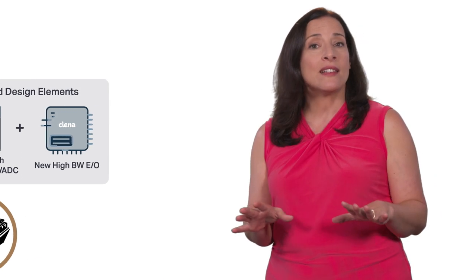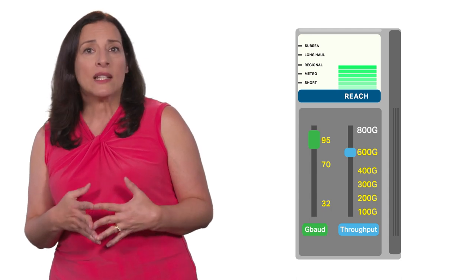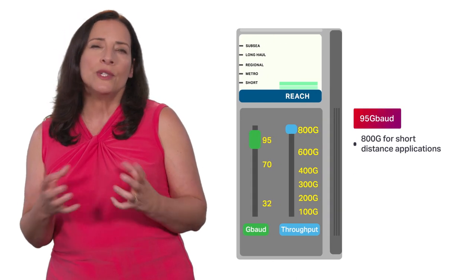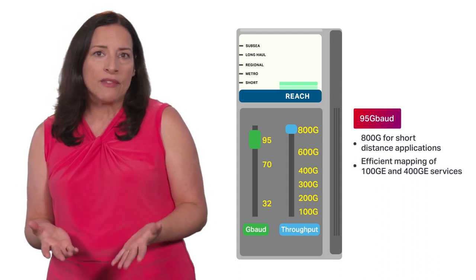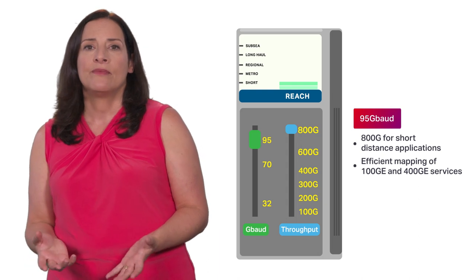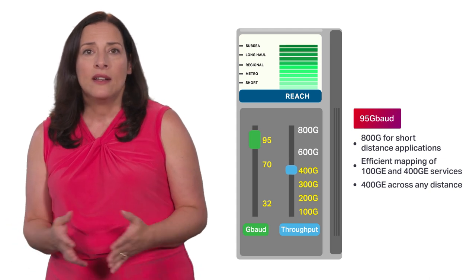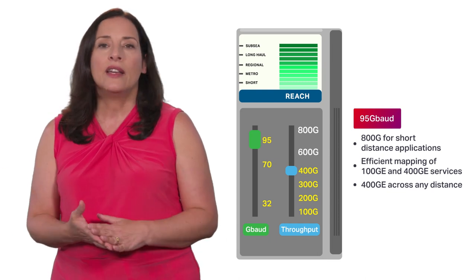So now that we've covered the context, let's see how this relates to WaveLogic 5 Extreme. Siena's WaveLogic 5 Extreme operates at 95 Gigabaud to support programmable capacity rates from 200 Gig to 800 Gig in 25 Gig increments. 95 Gigabaud was selected as a simple rate because it allows for maximum capacity of 800 Gig for practical short reach distances, like 100 to 200 kilometers, and 800 Gig can efficiently carry multiples of 100 GigE and 400 GigE services. It also allows for efficient transport of these new 400 GigE services across any distance. So 400 GigE can now be carried across the longest link in your network over a single wavelength, including transpacific distances.